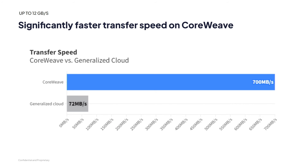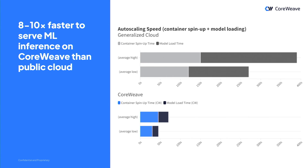Our transfer speeds are about 10x faster on our object storage. We've built our own object storage that allows for accelerated reads and writes, seeing about 700 megabytes per second versus roughly 72 megabytes per second on a generalized cloud. This can go up to 4 to 5 gigabytes per second and even reach wire speed of the network on some instances.